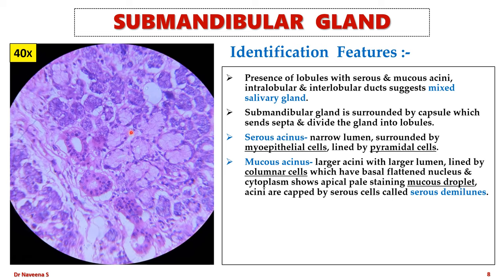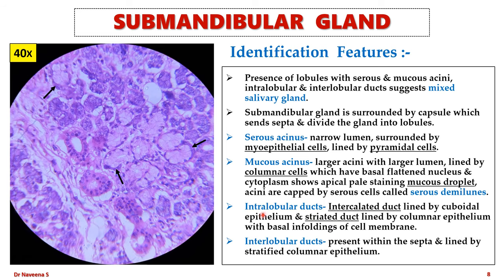Few mucous acini are capped by serous cells called serous demilunes. Coming to the ducts, which are similar to the parotid gland — intralobular ducts are of two types: intercalated and striated ducts, whereas interlobular ducts are seen within the septa and lined by stratified columnar epithelium.